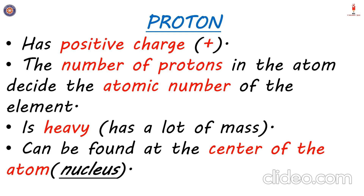The next property is that the proton is heavy. When I say heavy, it does not mean it weighs 100 kgs — in fact the mass of a proton is 1.6 × 10⁻²⁷ kg. This is a mass which we cannot feel at all. Then why do we say it is heavy? It is heavy compared to the mass of other particles, for example the electron which is very light. The next property is that the proton is found at the center of the atom, which is called the nucleus.